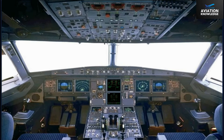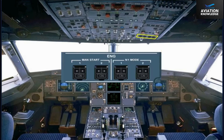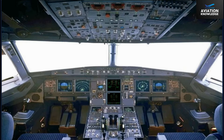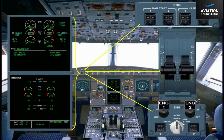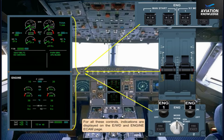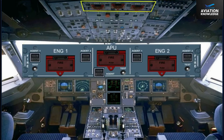On the overhead panel, there is an additional panel which is used for manual start and abnormal operation. For all these controls, indications are displayed on the engine warning display and engine ECAM page. The engines also have a fire protection system, covered in the ATIA 26 fire protection chapter.